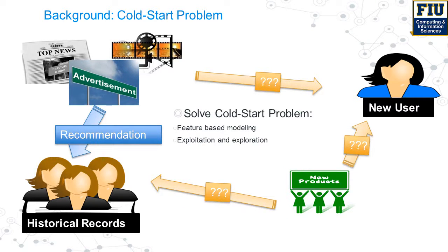To solve the Cold Start Problem, there are typically two ways: feature-based modeling with exploitation, and exploration. Our paper focuses on the latter one, which is formulated as a multi-arm bandit problem.